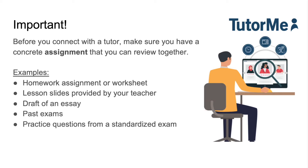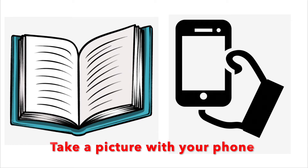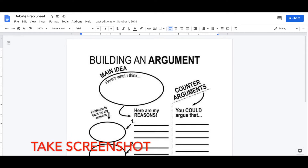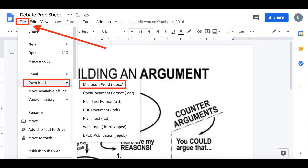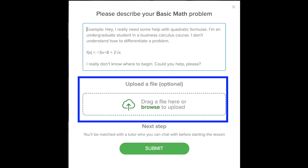Then in the box below you should upload work for the lesson. Here are some examples of the types of materials you can upload: a homework assignment or worksheet, lesson slides, a draft of an essay, past exams you want to review, and practice questions from a standardized exam. If you have a physical book or worksheet, simply take a picture of the page you want to upload. If your work is on Google Docs or Slides, you can either take a screenshot of the assignment or download it as a Microsoft Word or PowerPoint file.